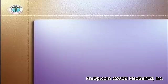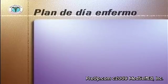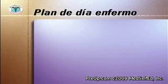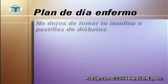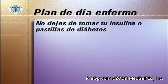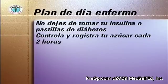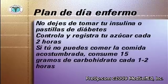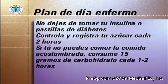Es muy importante diseñar un plan de emergencia antes de que se enferme. Si tiene síntomas tales como fiebre, tos, congestión, náusea o vómito, no deje de tomar sus medicinas para diabetes. Monitoree y registre su azúcar en sangre cada dos horas. Si no puede consumir su comida acostumbrada, trate de consumir 15 gramos de carbohidratos cada una a dos horas mientras esté despierto.